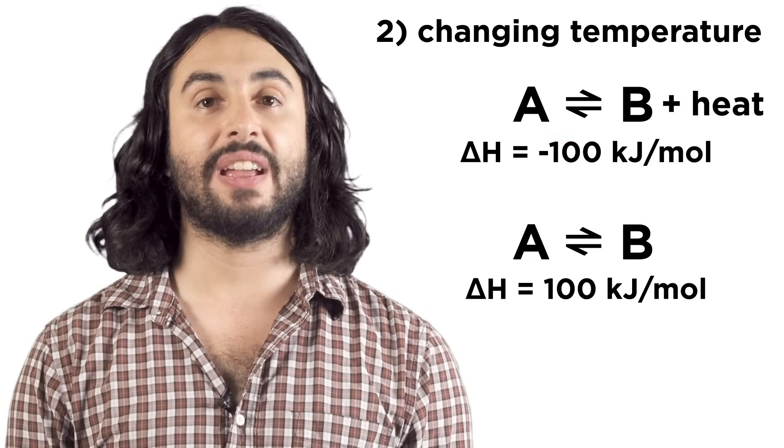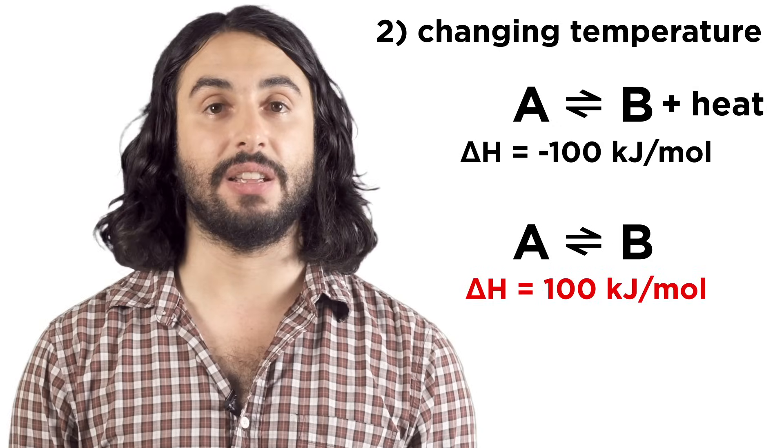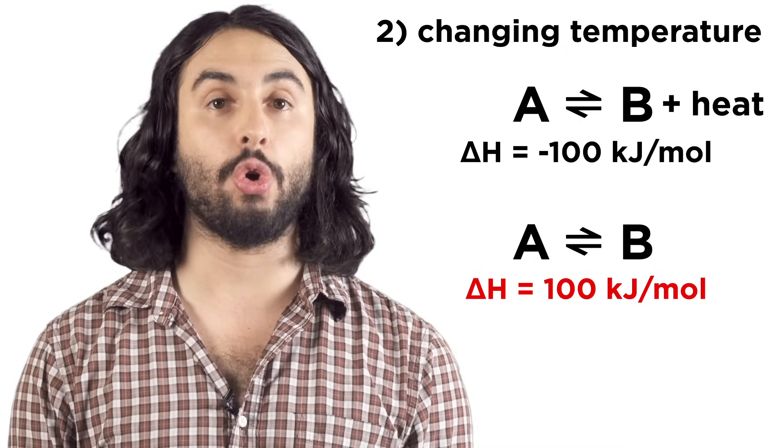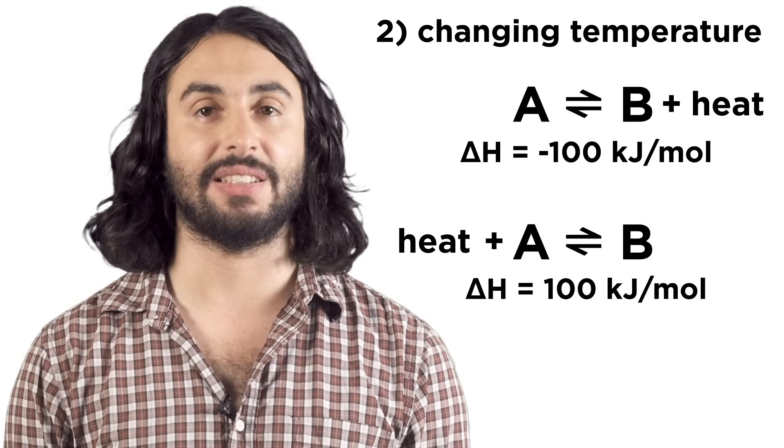If delta H is negative, the reaction is exothermic and releases energy, so we could think of heat energy as a product of this reaction. If instead it's positive, that means it's endothermic and energy must be absorbed for the reaction to go, so we could think of heat energy as a reactant in that scenario.